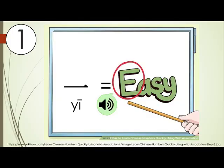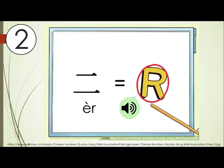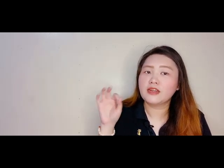We will start with number one. Number one is 一 (yī) — like 'easy', e. So it's easy — number one. Number two: in English we say 'er', right? So we just put a little bit of force — 二 (èr), 二 (èr).